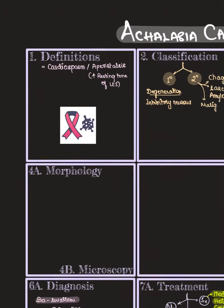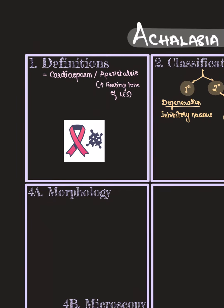Achalasia cardia, also called Cardiospasm or Aperistalsis, occurs due to increased resting tone of the lower esophageal sphincter. Remember that this is a pre-malignant condition.